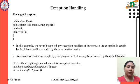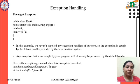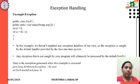So the exception is caught by the default handler provided by the Java runtime system. An exception that is not caught by your program will automatically be processed by the default handler. If you are not giving any exception handling in the program, it will be handled by the default handler. When this example is executed, java.lang.ArithmeticException — division by zero — is thrown. Since 42 divided by 0 is invalid, we get a runtime error.